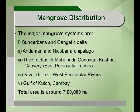The major mangrove distributions are found in the Sundarbans and the Gangetic Delta, the Andaman and Nicobar archipelago, and the river deltas of the Mahanadi, Godavari, Krishna and Kaveri rivers — the east peninsula rivers. There are also west peninsula rivers, and the Gulf of Kutch in Cambay. The total area of mangrove distribution in India alone is 7 lakh hectares.